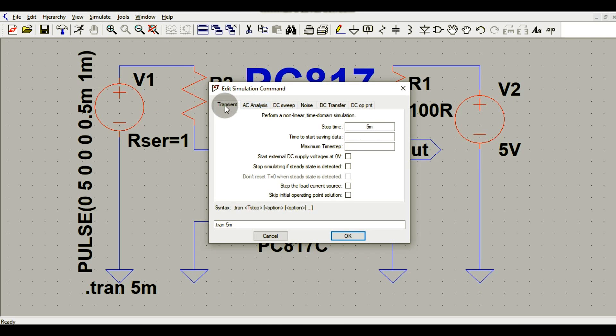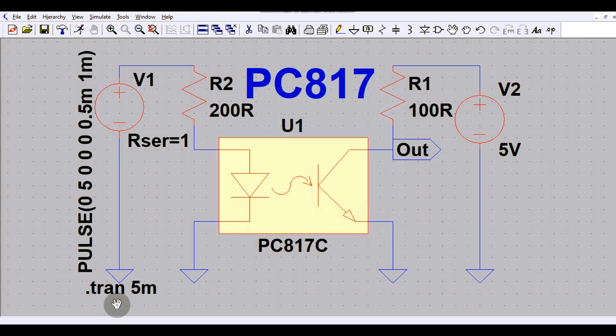Let us say stop time is five millisecond. You are running your transient analysis for five millisecond. Let us click okay. This is the pulsating source voltage. The frequency is one kilohertz and the low voltage is zero and the high voltage is five volt. And here this is the fixed DC supply that is five volt.